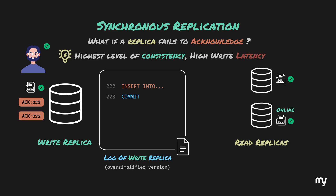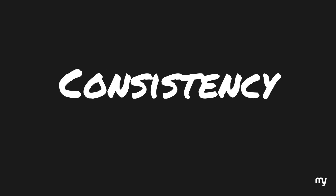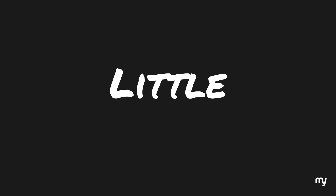While this approach delivers the highest level of consistency, it comes at a cost: write latency. Since the primary must wait for every replica to acknowledge, even a slight delay from one replica can slow down the entire process. This is why, for example, when you make an online payment or transfer money, you often see a loading bar for a few seconds. Applications like these prioritize consistency even if it means sacrificing a little speed, because inconsistency in financial data can be quite dangerous and have a legal impact. Not every system can afford this kind of delay.